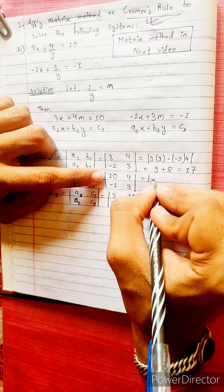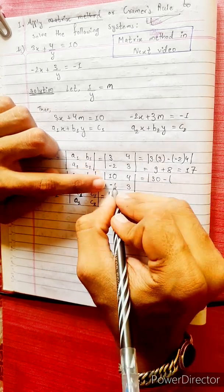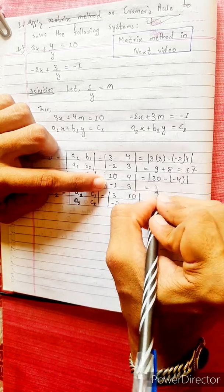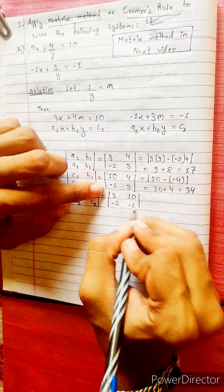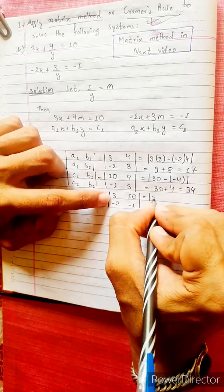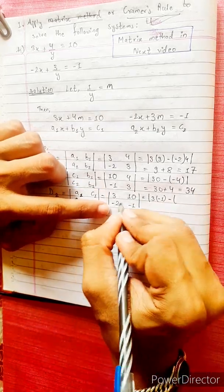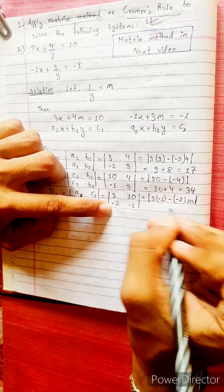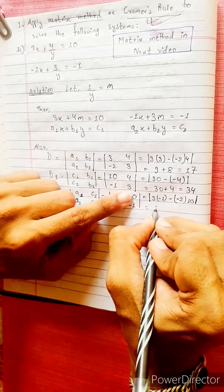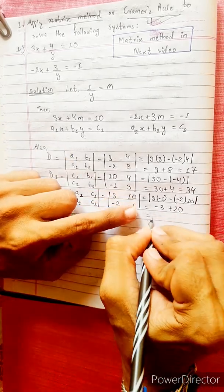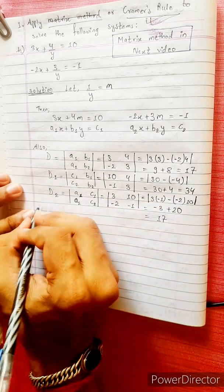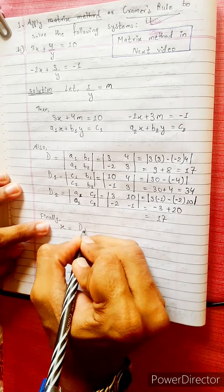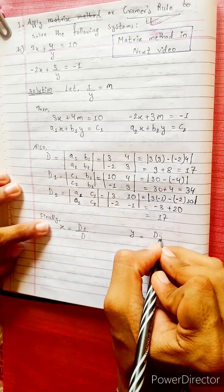For D1: 10 into 3 minus minus 1 into 4, equals to 30 plus 4, equals to 34. For D2: 3 into minus 1 minus 2 into 10, which equals to minus 3 minus 20, equals to minus 17. Finally, applying Cramer's rule.